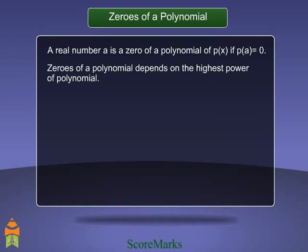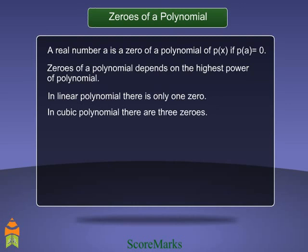The zeros of a polynomial depend on the highest power of the polynomial. In a linear polynomial there is only one zero. In a cubic polynomial there are three zeros.